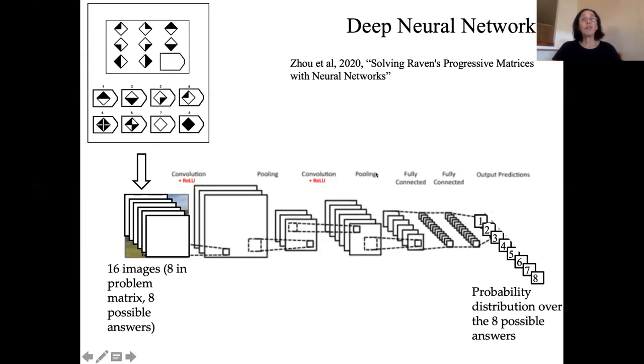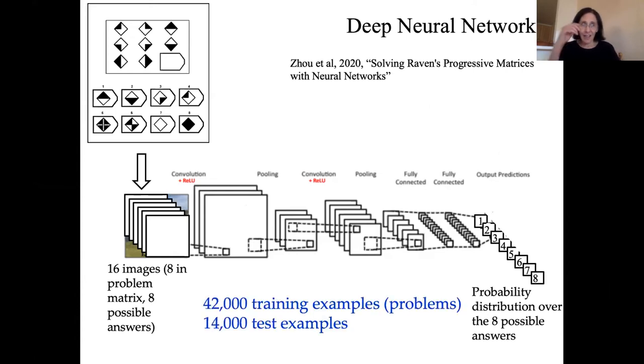Then a convolutional neural network, there's different neural networks that they tried. The idea was to use convolutional neural networks to develop representations of these figures, and to learn from many examples, to map these 16 images to a probability distribution over the eight possible answers. Unlike SME, where there's no notion of training, there's a built in repertoire of possible descriptions of the images. Here, there's no built in prior knowledge. So the system had to learn from many tens of thousands of training examples.